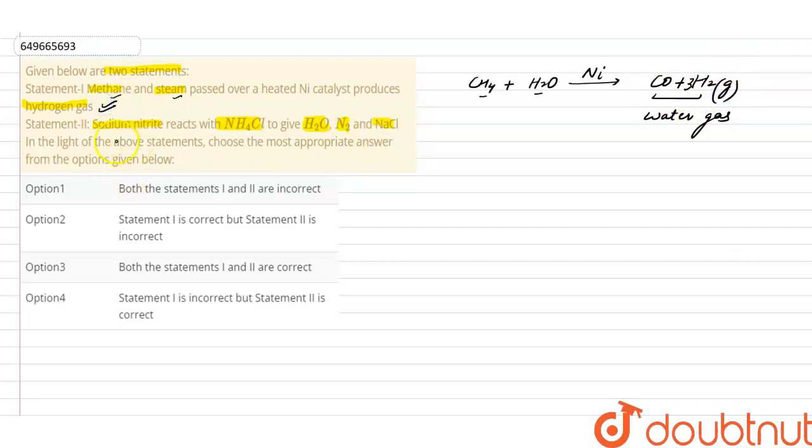This statement reacts with NH4Cl. So, sodium nitrite that is NaNO2 plus NH4Cl. So, this reaction will be N2 plus 3H2O. So, statement given is that H2O produced and N2 produced. So, it is correct and NaCl produced and NaCl produced and this also is correct.